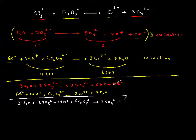Giving us 3 sulfate plus 6 H+ plus 2 Cr^3+ plus 7 H2O. Now we can also simplify the H's. You have 14 H versus 6, so this goes away and this becomes 8 H+.